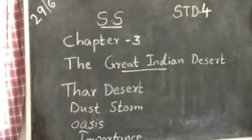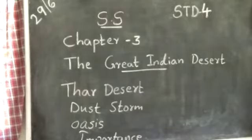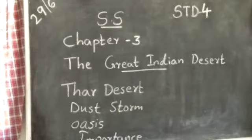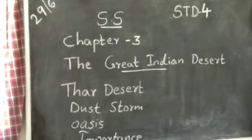We can see a desert on our planet. A desert is an area of land covered with sand that receives little or no rainfall. It is an area of land covered with sand and very less rainfall, and here you can see no vegetation.